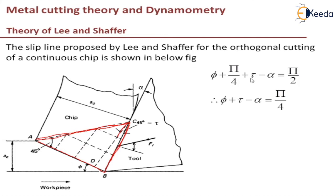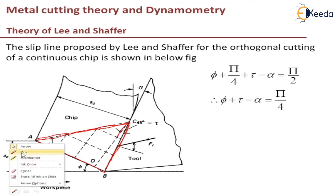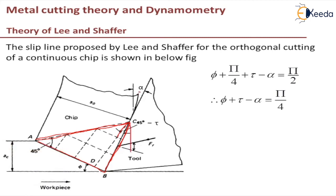Lee and Schaffer obtained an equation for the shear angle φ: φ + π/4 + τ − α = π/2. How did they get that equation? The angle α is the rake angle, and the small angle given is (45° − τ). Since this angle is (45° − τ) and this adjacent angle is 90°, the remaining angle equals 180° − 90° − (45° − τ), which gives 45° + τ, written as π/4 + τ.